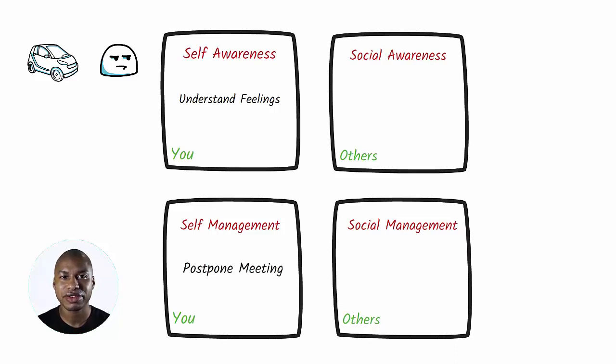The other example is related to the social quadrants. You have noticed that one member of your team is happy when he has to produce reports with some data analytics. Based on this social awareness and management skill, you decide to give him more reports to produce when needed and reinforce this skill with a training course.